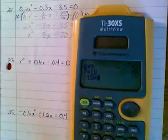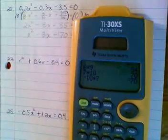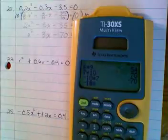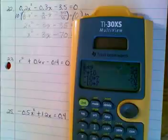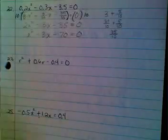Now which one of these numbers should be negative to multiply up to negative 70 and add up to negative 3? That's right, it'd be negative 10 and positive 7 would multiply to give you that, and then they would add to give you negative 3.